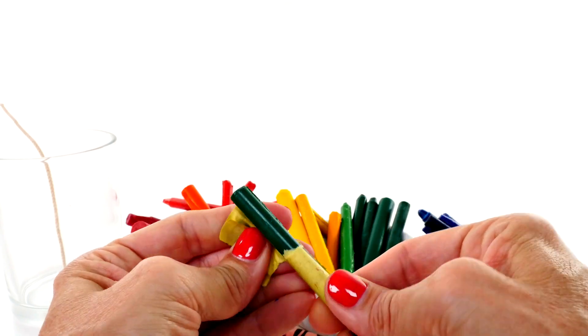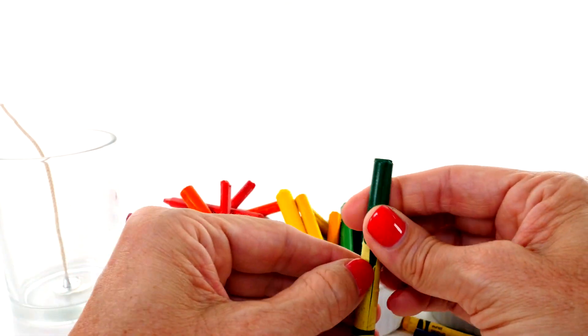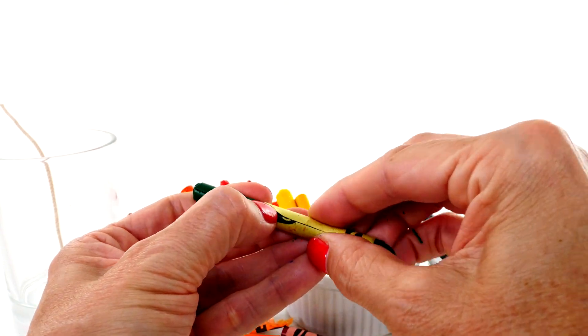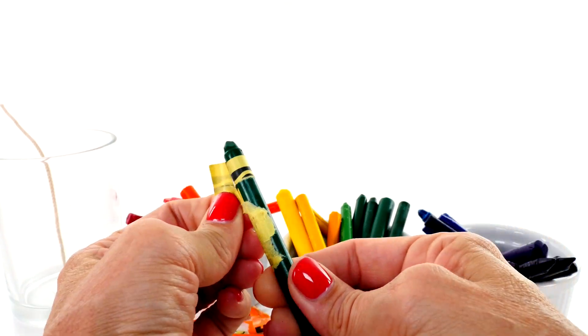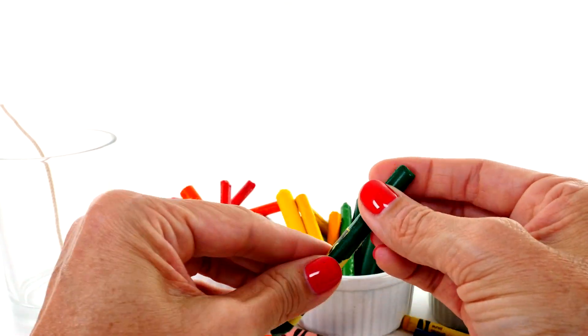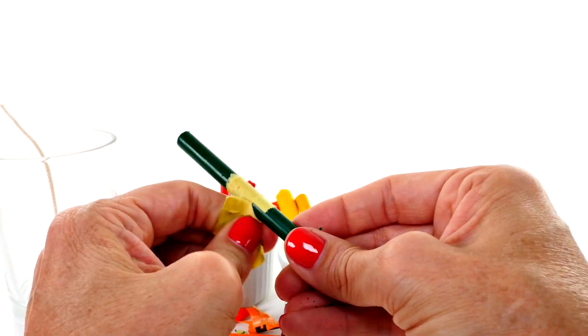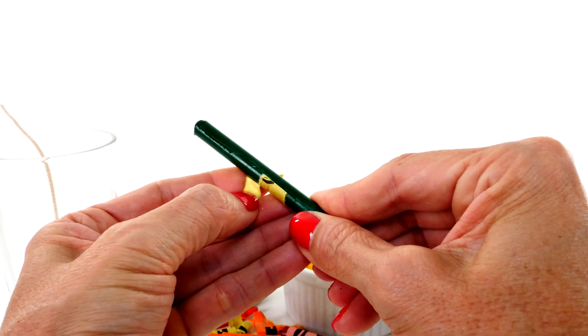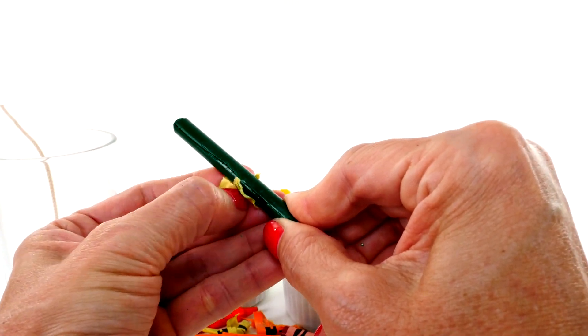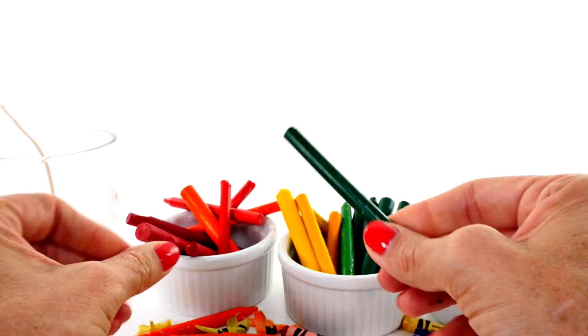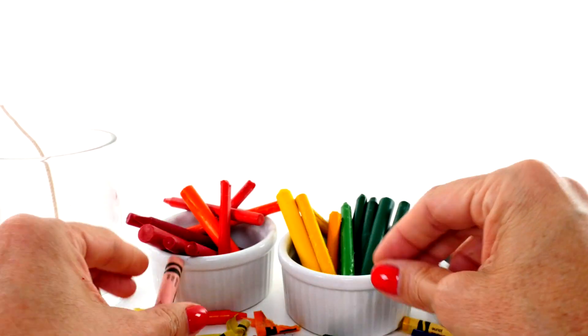So when we have all the crayons that we need, we're going to break them into tiny pieces and fill up the jar. And then the sciencey part of it is we are going to make this candle using just the sun. So I hope it works. It's really hot and sunny in North Carolina today, so I think we'll be in good shape.